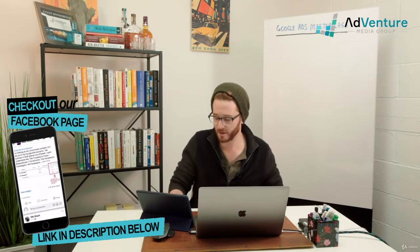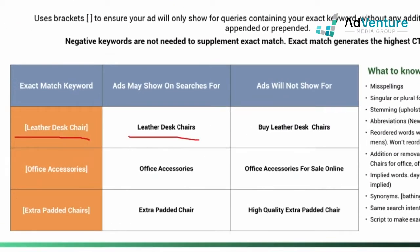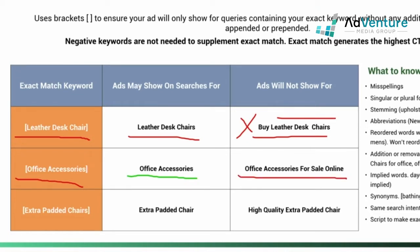Let's look at a couple of examples. 'Leather desk chairs' in brackets will show for 'leather desk chairs' but not for 'buy leather desk chairs' — even though the phrase is included, there's an extra word not in the keyword. 'Office accessories' in brackets will show for 'office accessories' but not for 'office accessories for sale online,' because 'for sale online' are additional words that don't appear in the keyword.